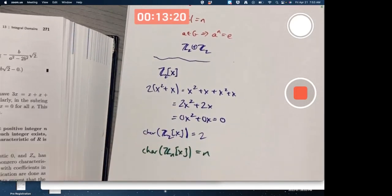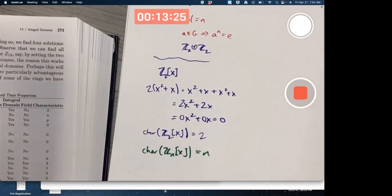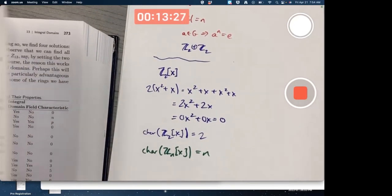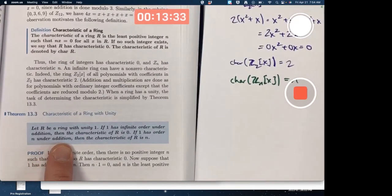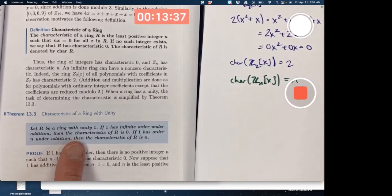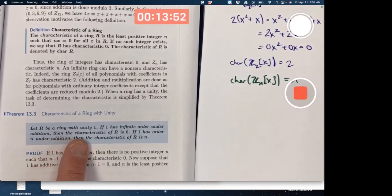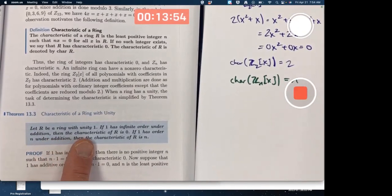A couple theorems. They're not super important theorems for us, but they're worth noting. Let r be a ring with unity 1. There's something that's not in group theory, right? Unities. In group theory, if we're talking about the operation being addition, 0 is the additive identity. If we've got a ring now and we're thinking about a unity, we're thinking about the multiplication.